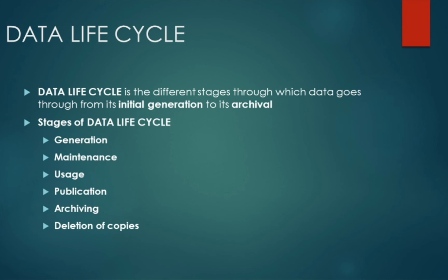Once we have that data — it can be sensor data, everyday transaction data, or anything — the next phase is maintenance, where we actually process it before use. This is the concept of data warehousing, where we extract, transform, and load the data, known as ETL, which will be discussed in further videos. Then comes the usage phase: now that we have integrated the data and extracted meaningful information, we can use it. The usage phase is where organizational objectives and operations are applied to the data.